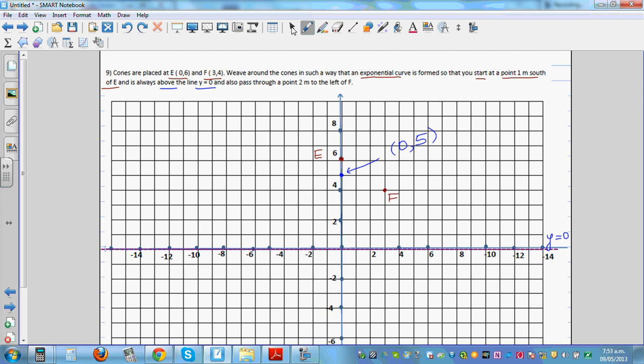You're passing through this point which is 0 comma 5. If you're going in a hyperbolic shape, it would look somewhat like this. This is going to infinity and this is a decay curve, so it goes like this.